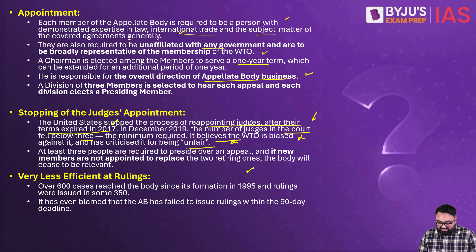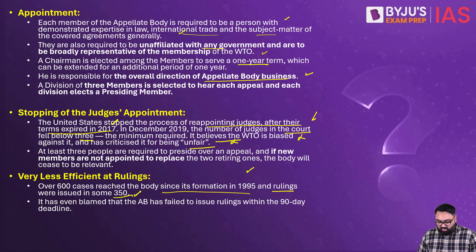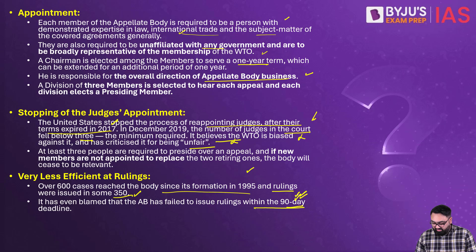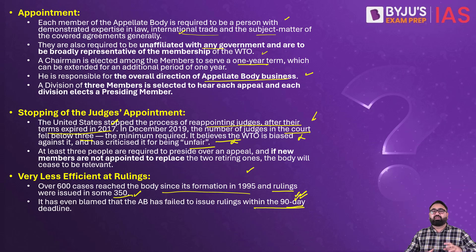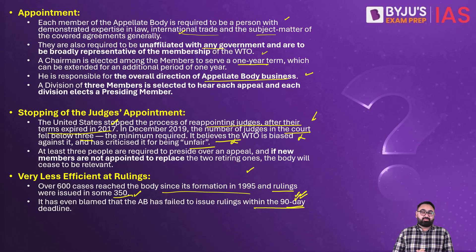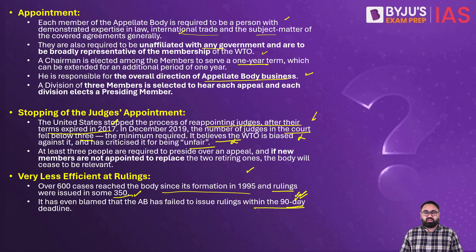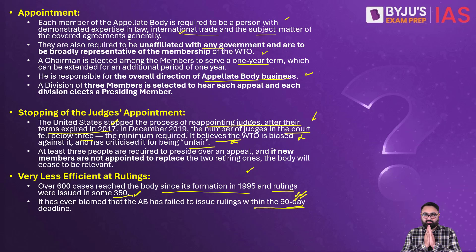Over 600 cases have reached this body and only 350 of them have been resolved. The ruling has to be given within a 90-day time period, which they have also not been able to maintain, largely because the US has used its immense power at the global platform once again — highlighting how dangerous a monopoly of power can be. This brings us to the end of today's discussion of the daily quiz. Have a good day ahead. Bye-bye.